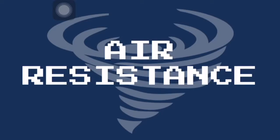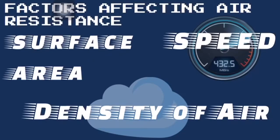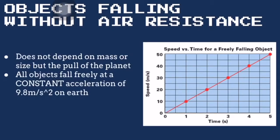Moving on to air resistance. Air resistance is a frictional force — it increases with the density of air and with the speed and surface area of the object. Objects falling without air resistance are actually undergoing freefall. The acceleration of freely falling objects does not depend on their size or mass, but on the gravitational pull of the planet. The acceleration of freefall equals the gravitational field strength; hence, all objects on Earth fall freely at a constant acceleration of 9.8 m/s².